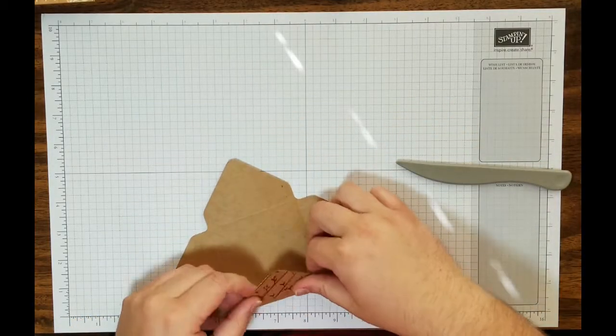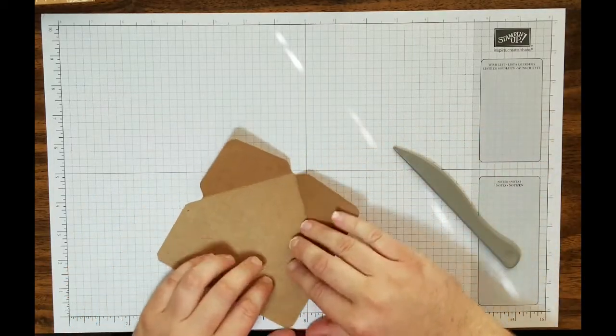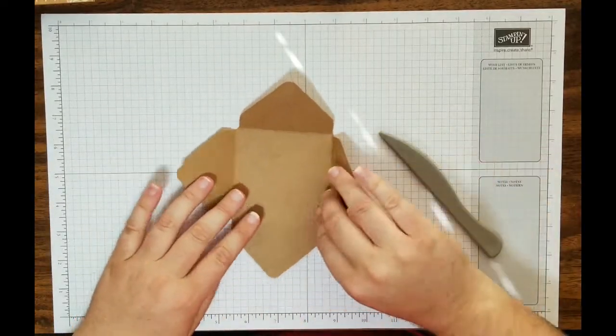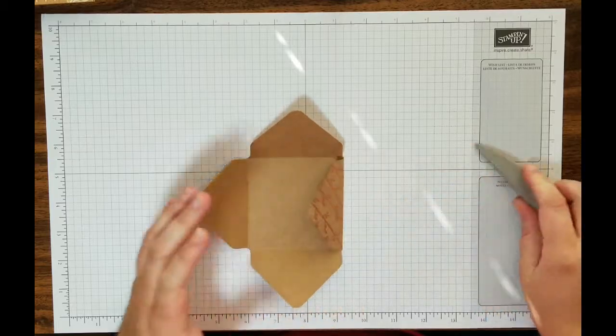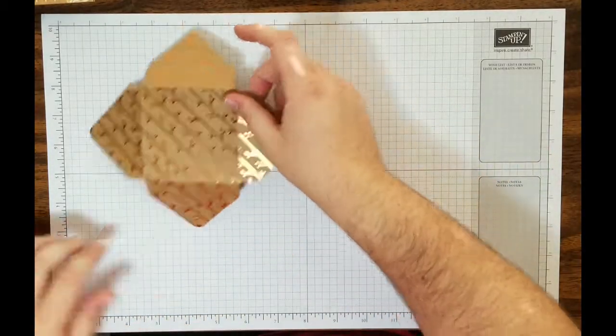Gently fold your edges. This card stock has this embossed foil into it. So that's why I think it's so pretty. Very simplistic project. Anybody can do it. Alright. So there you go. Set this off to the side.